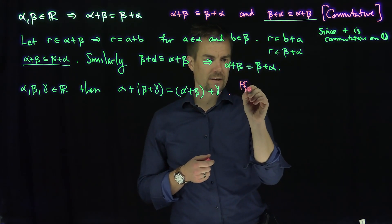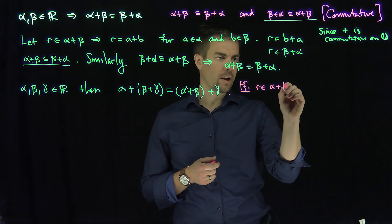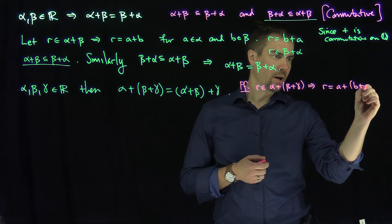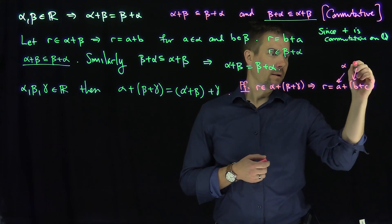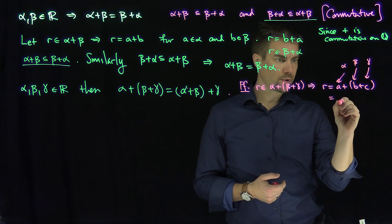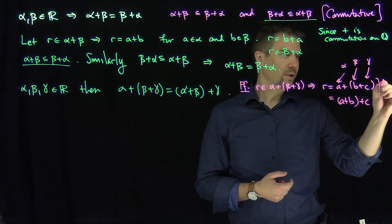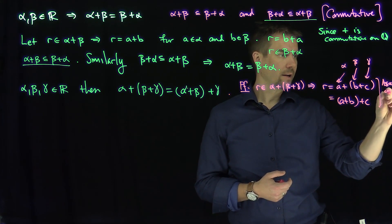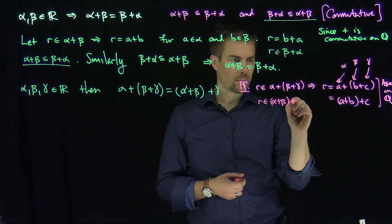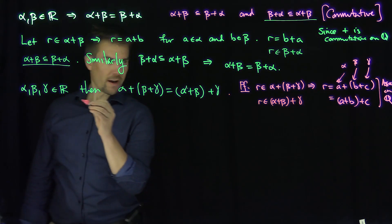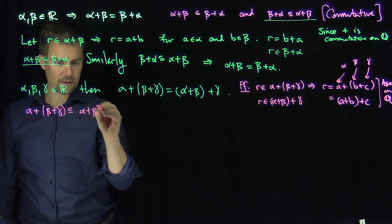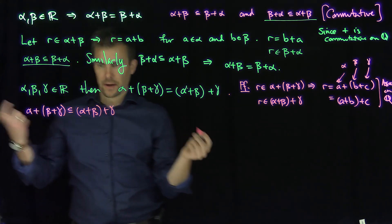Here's the proof: if I pick an R that's in alpha plus open-paren beta plus gamma close-paren, that means R has the form A plus open-paren B plus C close-paren, where A is in alpha, B is in beta, and C is in gamma. Then I can associate on Q — this is equal to open-paren A plus B close-paren plus C — and this is just associativity on Q. Therefore R is in open-paren alpha plus beta close-paren plus gamma, and so we have the inclusion that alpha plus open-paren beta plus gamma close-paren is contained in open-paren alpha plus beta close-paren plus gamma. The opposite inclusion is identical.